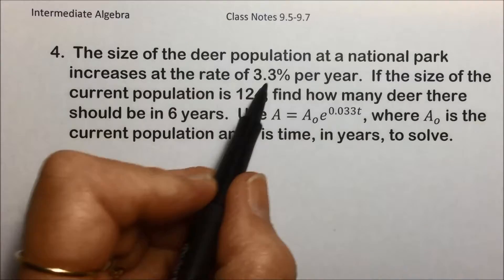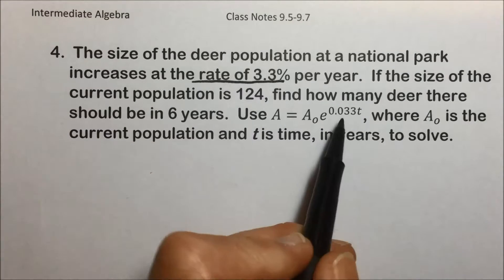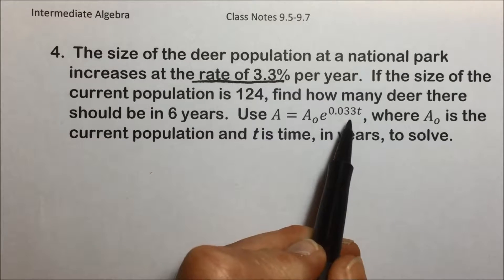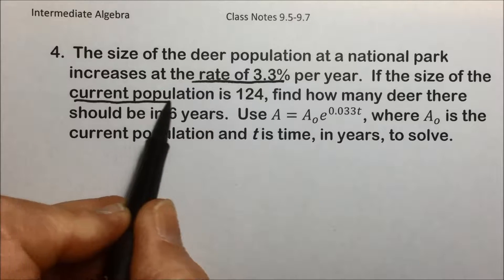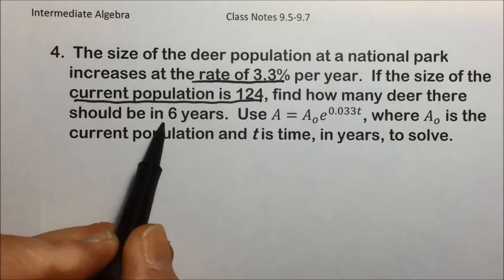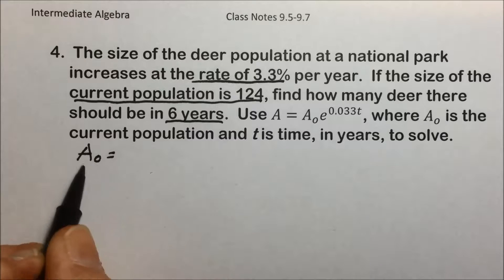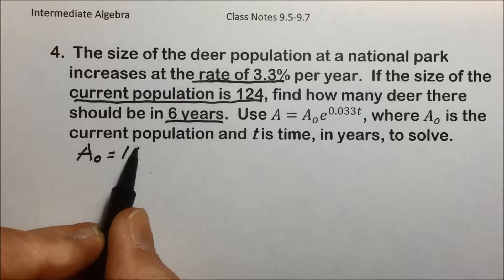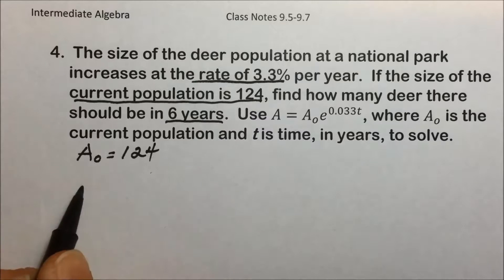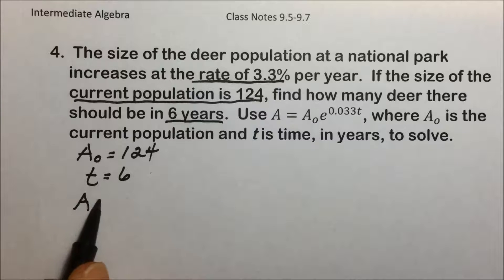So they're telling us that we have a rate of 3.3% and if you notice that, that's part of the formula. They're telling us the current population and they're asking us for a time of 6 years. So identifying that information, we have current population of 124, they're telling us a time of 6 years, and they're asking us what will that population grow to if it has an annual rate of 3.3% growth.